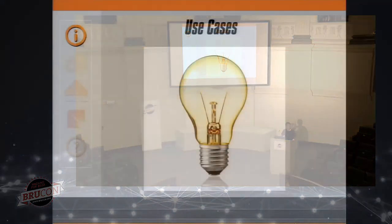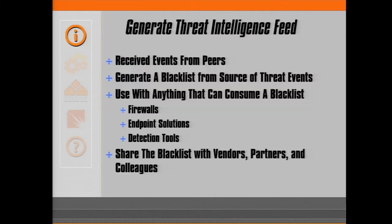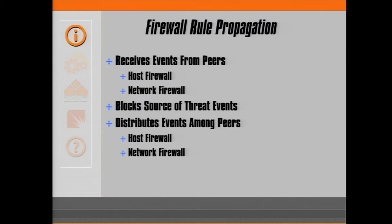But there are other use cases. We want to do more than just share a fail2ban jail. Generate threat intelligence feed: events shared between peers could be used to generate a blacklist, which you can use with anything that can consume a blacklist — firewalls, endpoint solutions, detection tools. You could share the blacklist with vendors, partners, colleagues. Firewall rule propagation: host firewalls and network firewalls can receive events from peers, block the threat, and distribute events among peers so that other firewalls can block threats they've seen.